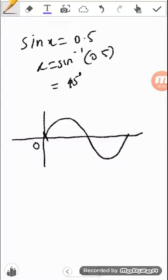And let's say this asks me to solve between 0 and 360. So what I'm going to do, I'm going to find where 0.5 is on my graph, and I know the graph of sine goes from 1 all the way down to minus 1, and 0.5 will be somewhere about here.